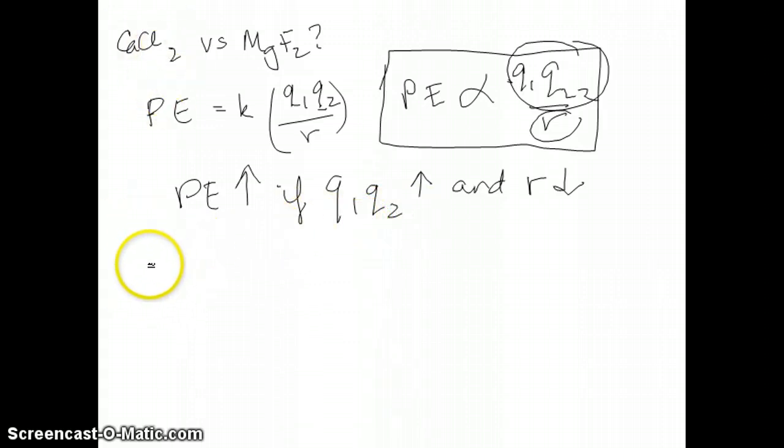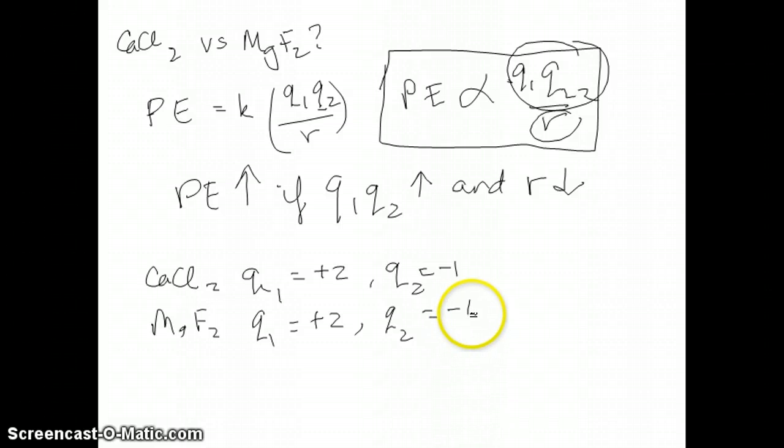Now we're going to actually compare the two numbers. So for CaCl2, the Q1 which is the charge of the cation is plus 2. The Q2 which is the charge of the anion is negative 1 because it's a minus 1 ion. For MgF2, Q1 is also plus 2 because magnesium is a plus 2 cation and Q2 is also negative 1 because fluoride is a negative 1 anion. So in other words, from the perspective of charges, these two ionic compounds have exactly the same strength.